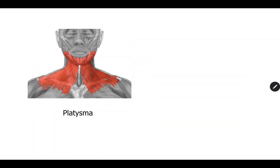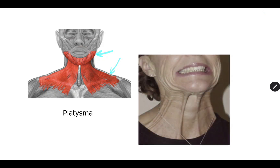The platysma muscle is attached on one side to the mandible and on the other side to the skin of the neck and the upper part of the chest. We can move the skin of the neck and upper chest by contracting this muscle. You can see the contracted muscle fibers bulging out under the skin of the neck.